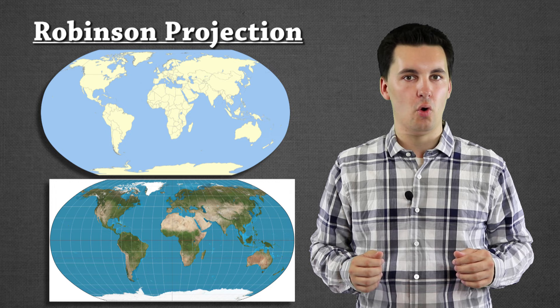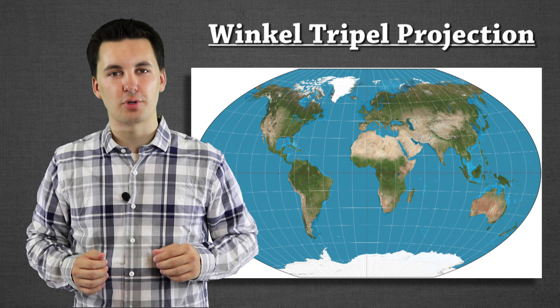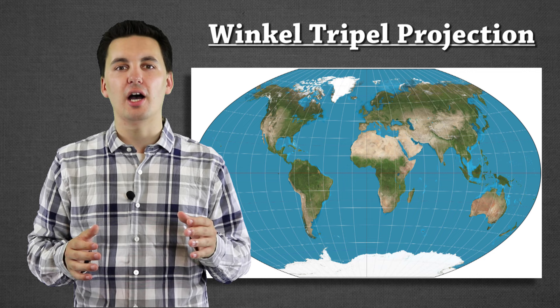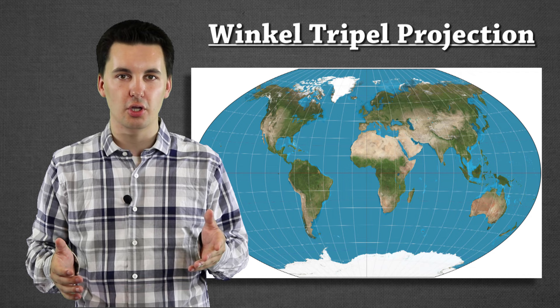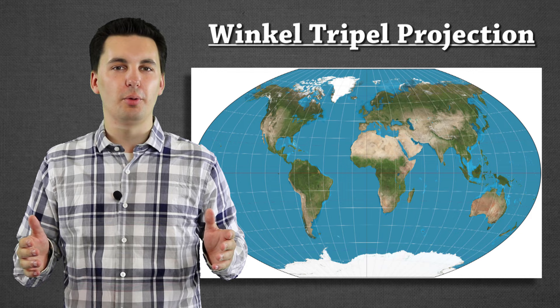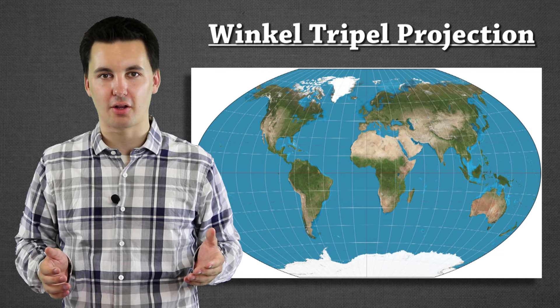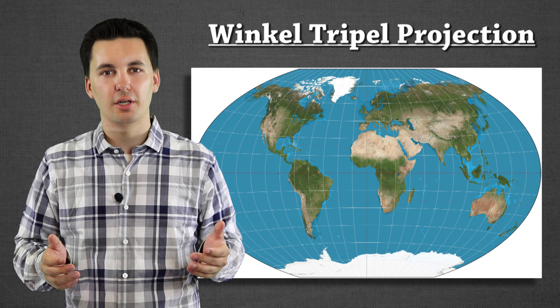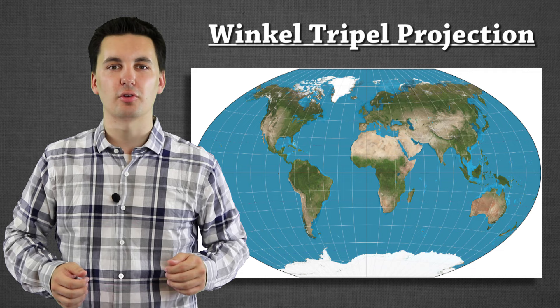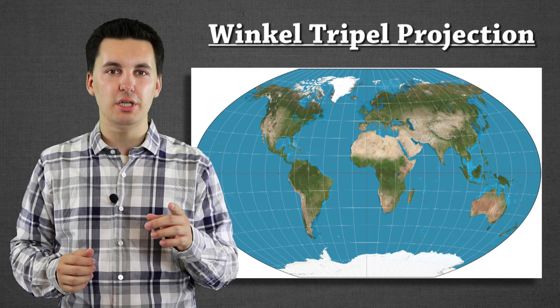Our last map projection is the Winkel Tripel projection. A lot of students confuse this with the Robinson projection, so make sure you focus on the size and shape to tell them apart — the Winkel Tripel is more round and also larger. The Winkel Tripel projection excels at showing very minimal distortion when it comes to land, distance, and direction. Where it does struggle is at the poles — the north and south poles will be distorted. Also, lines of longitude and latitude are curved in this projection. It is also an uninterrupted map, and those are the main identifying features of the Winkel Tripel projection.